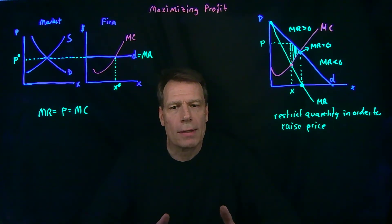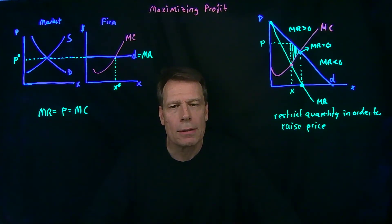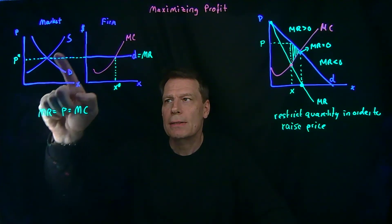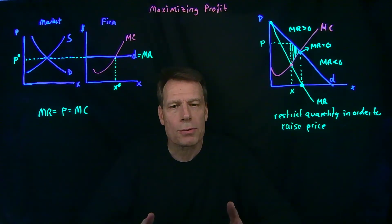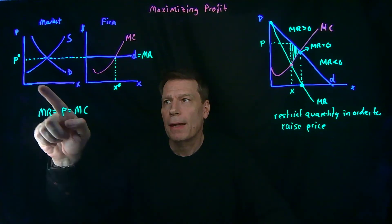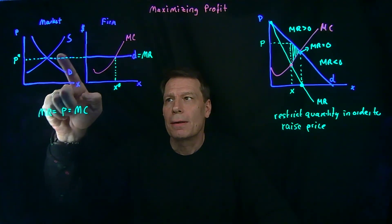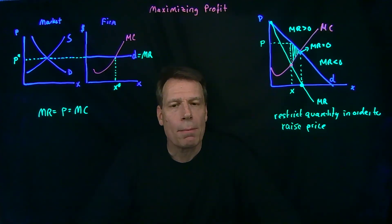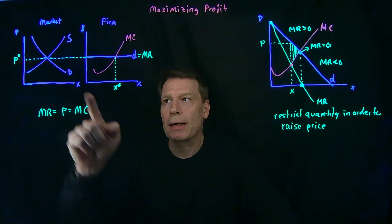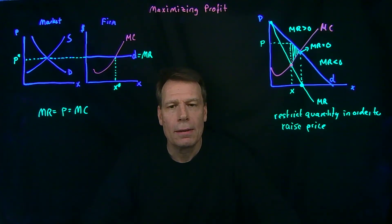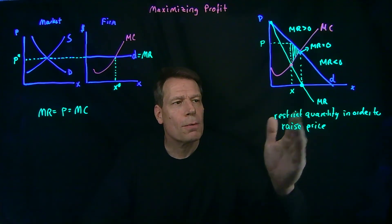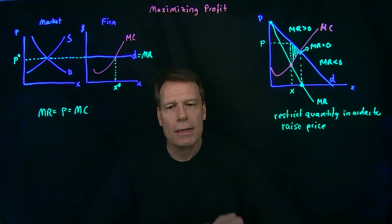That's not a problem we face in perfectly competitive markets. Because in perfectly competitive markets, the supply curve is the sum of all the marginal cost curves of the firms, so it represents the marginal cost to society. And in the absence of externalities, that represents the marginal costs, and the demand curve represents the marginal benefits. The market produces where those two intersect, which is in fact where there's no deadweight loss. But here, the firms restrict quantity in order to raise price, and that's what produces the deadweight loss.